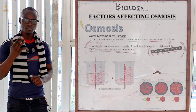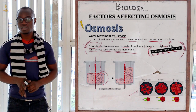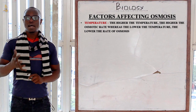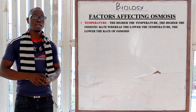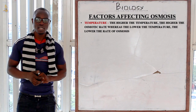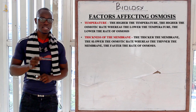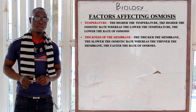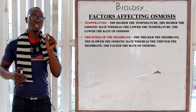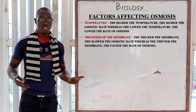Let's look at the factors affecting osmosis. The first factor is temperature. The higher the temperature, the higher the rate of osmosis; the lower the temperature, the lower the rate of osmosis. The next factor is the thickness of the membrane. The thicker the membrane, the slower the osmosis process will take place. The thinner the membrane, the faster the process of osmosis will take place.